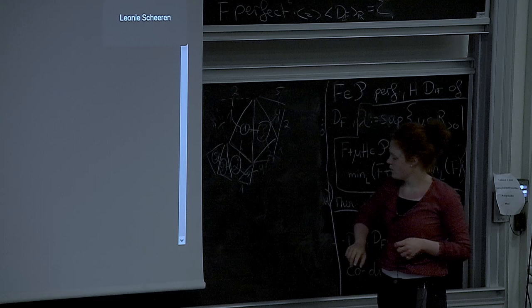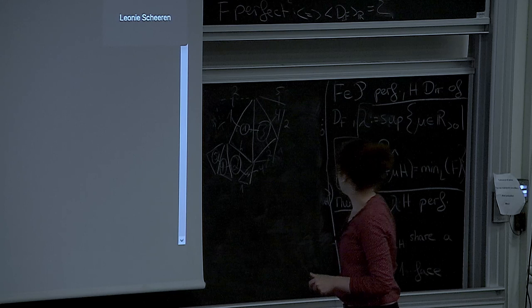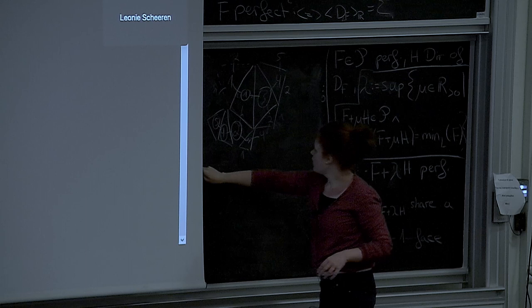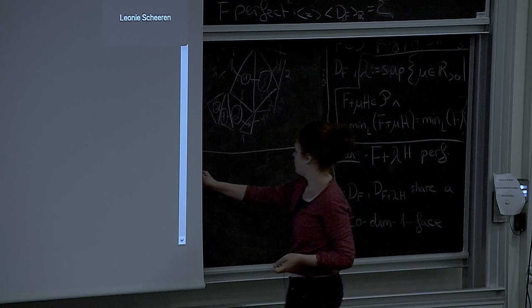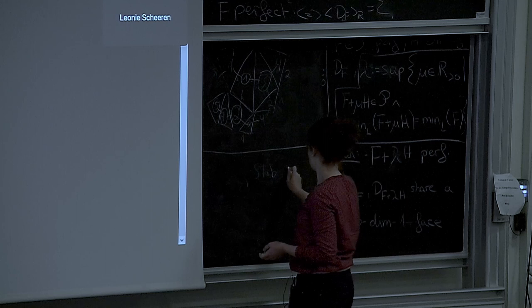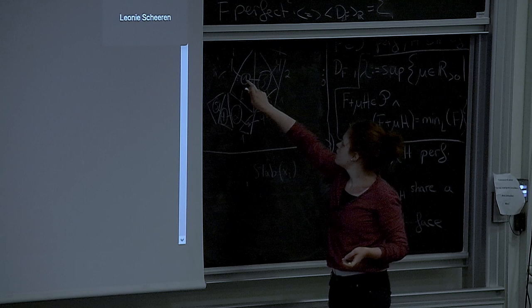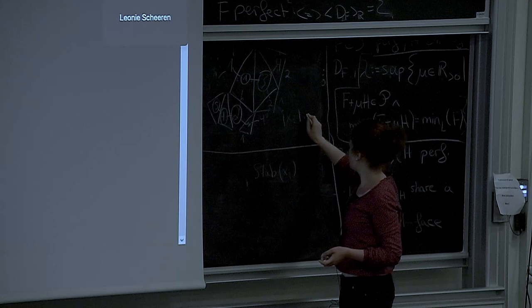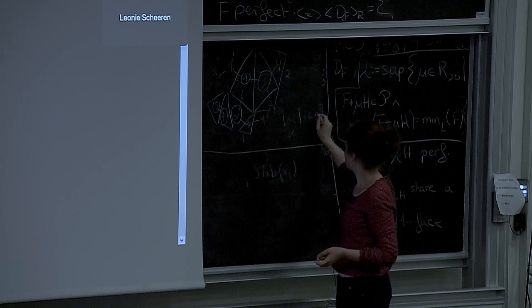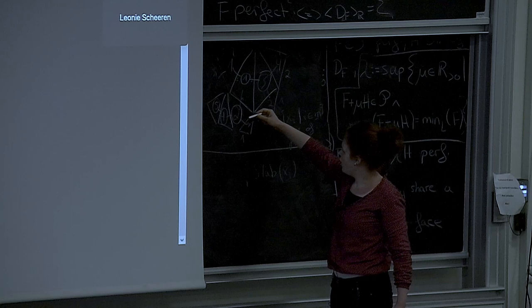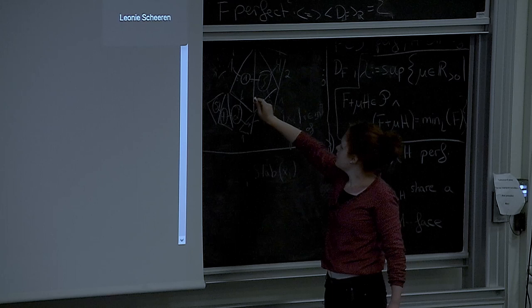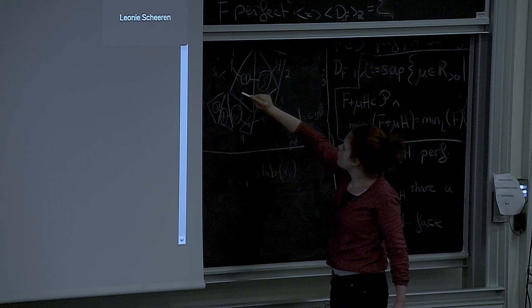I'll just write down the generators we get when applying plus structure theorem to that. And that's going to be the stabilizers of our representatives of perfect forms. And what we'll also get as generators are elements of O that send the neighbors of perfect forms, for example, this one here, which is a neighbor of our representative one, to the representative we fixed.